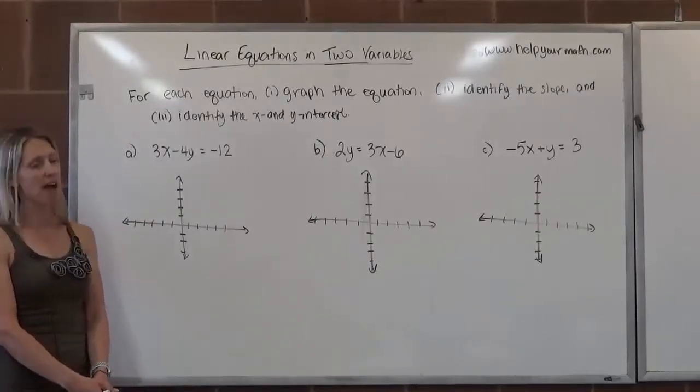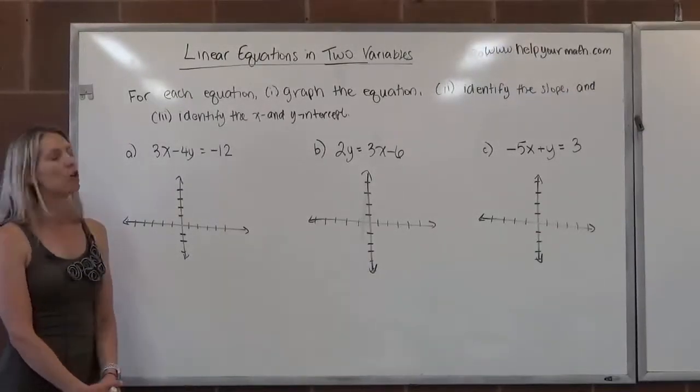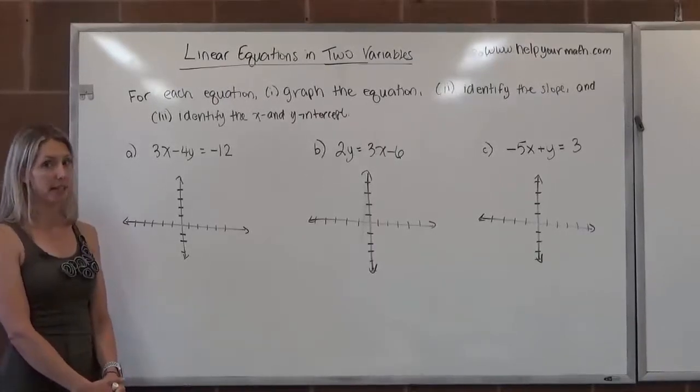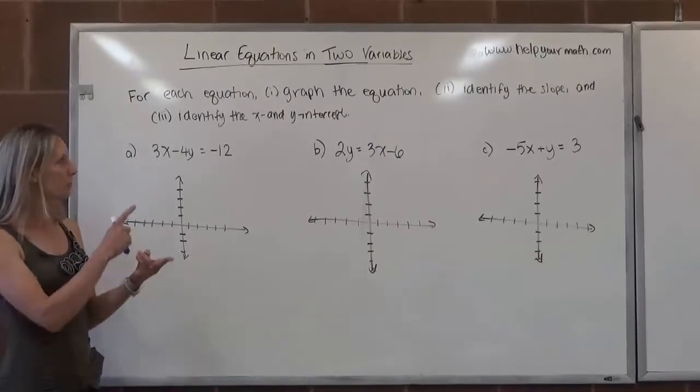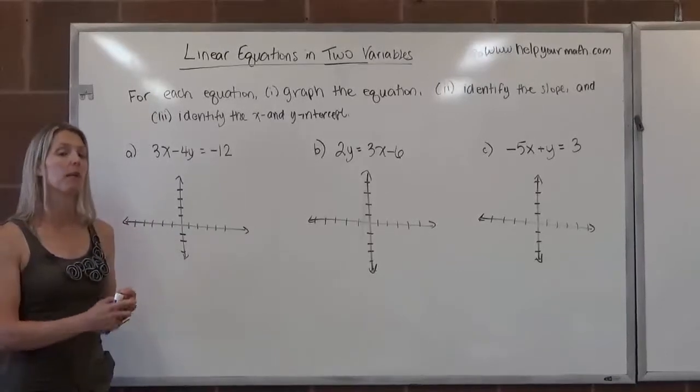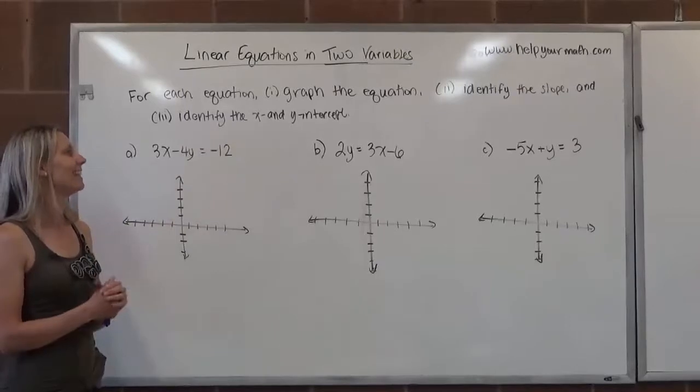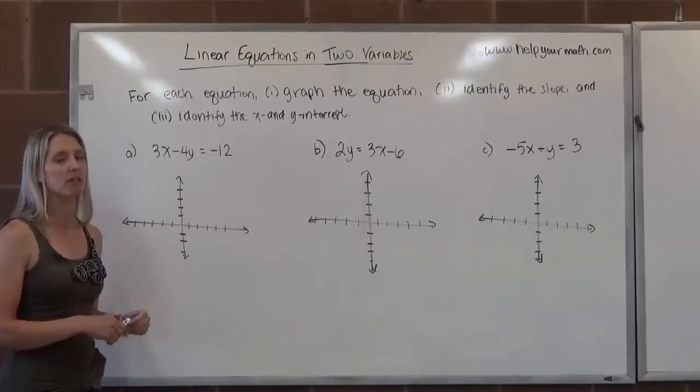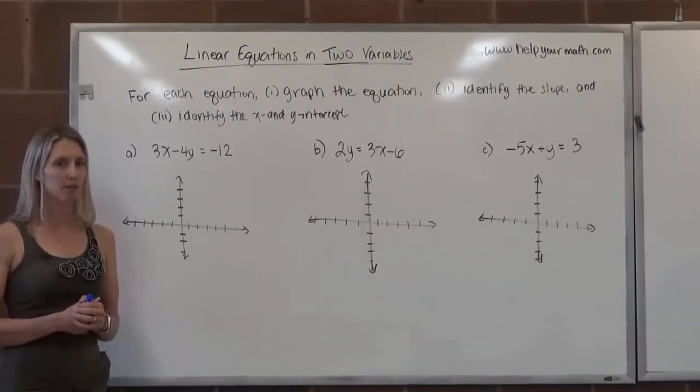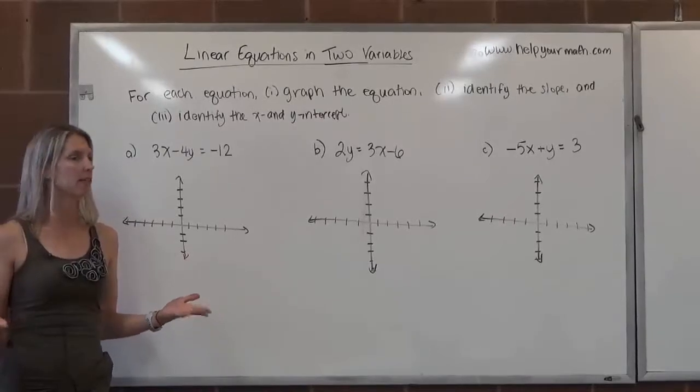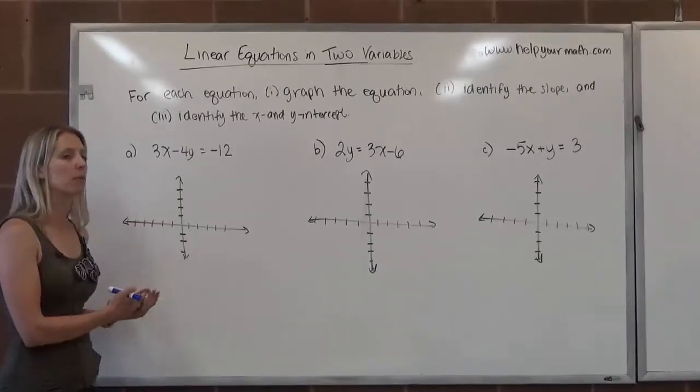For each equation we're going to graph it, identify the slope, and identify the x and y intercept. If we're going to find the slope and the y intercept then we might want to rewrite our equation in slope intercept form. But if we want to find the intercepts, then we might want to write the equation in standard form. So it's really up to us to decide whether we want to rewrite it or not.